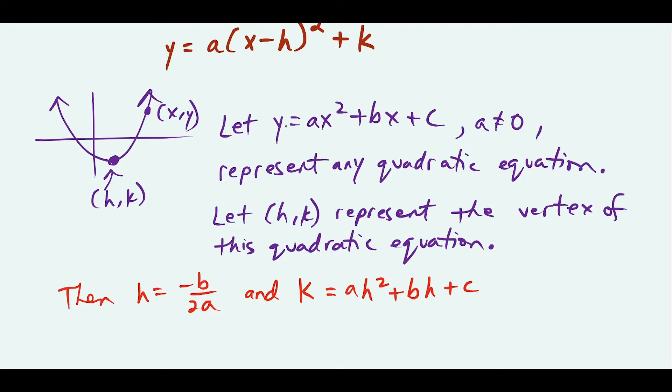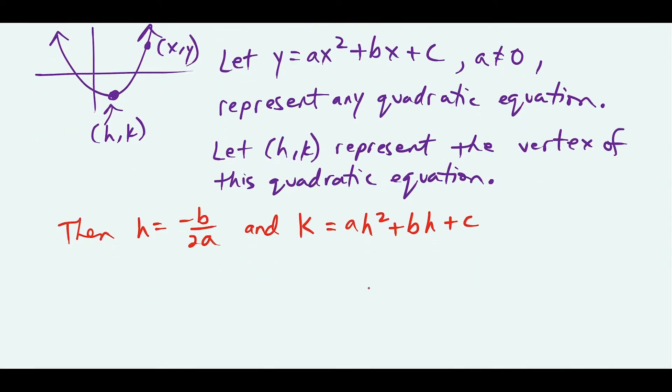So if I want to know what k is, I plug in the corresponding value h in for each of these x's. So I have ah squared plus bh plus c. But now what do we gain from this?